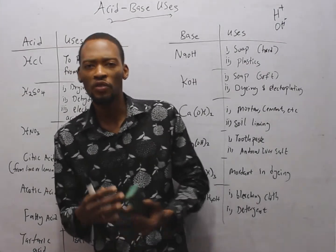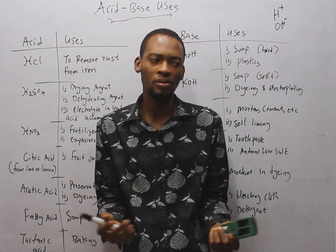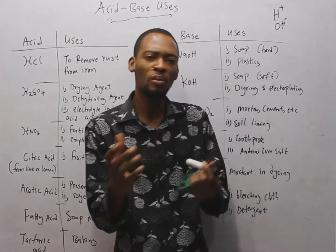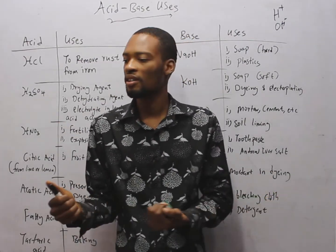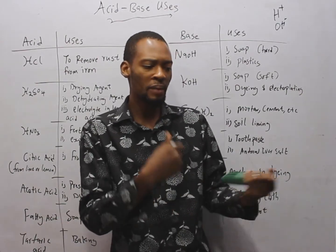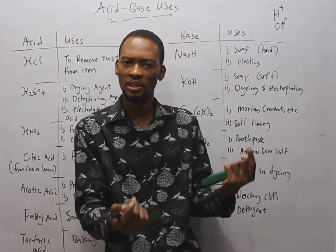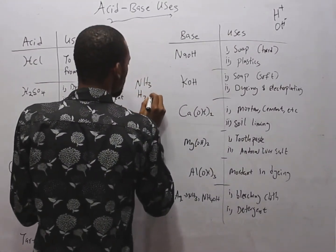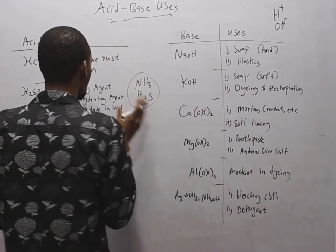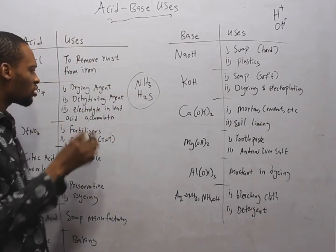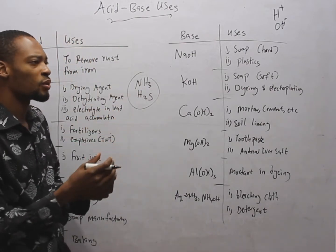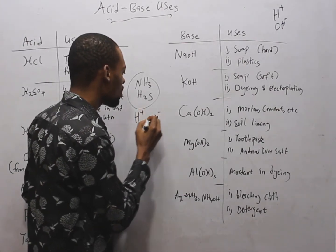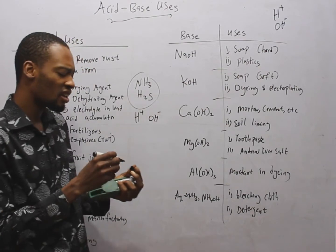Drying is the removal of water molecules. Meanwhile, dehydration is the removal of elements that make up water. Water is made up of hydrogen and oxygen, or OH. If you are removing those elements of water, you are dehydrating. H2SO4 is also used to dry ammonia and H2S as a drying agent. Dehydration is the removal of elements of water, like hydrogen ion or hydroxide ion.